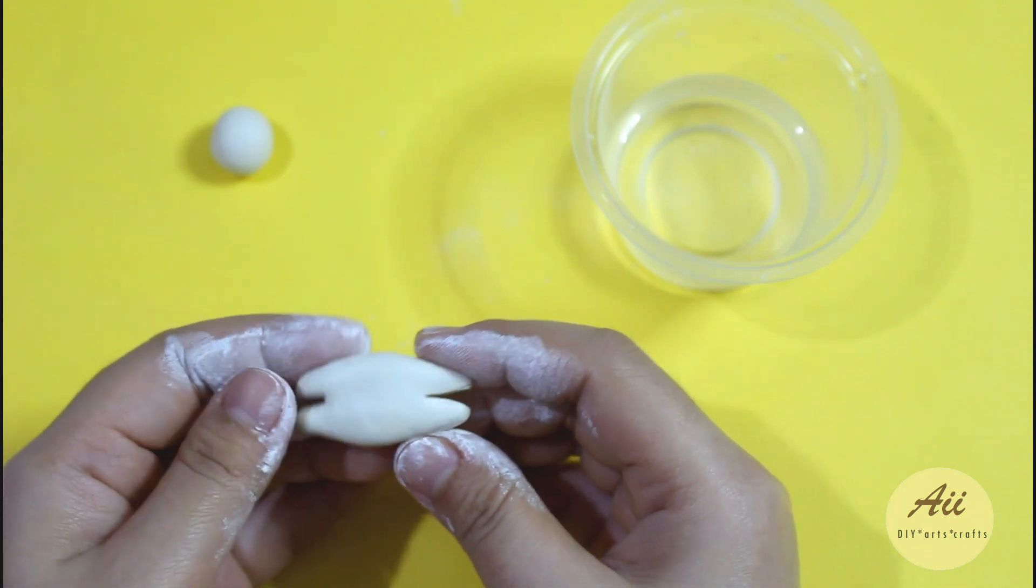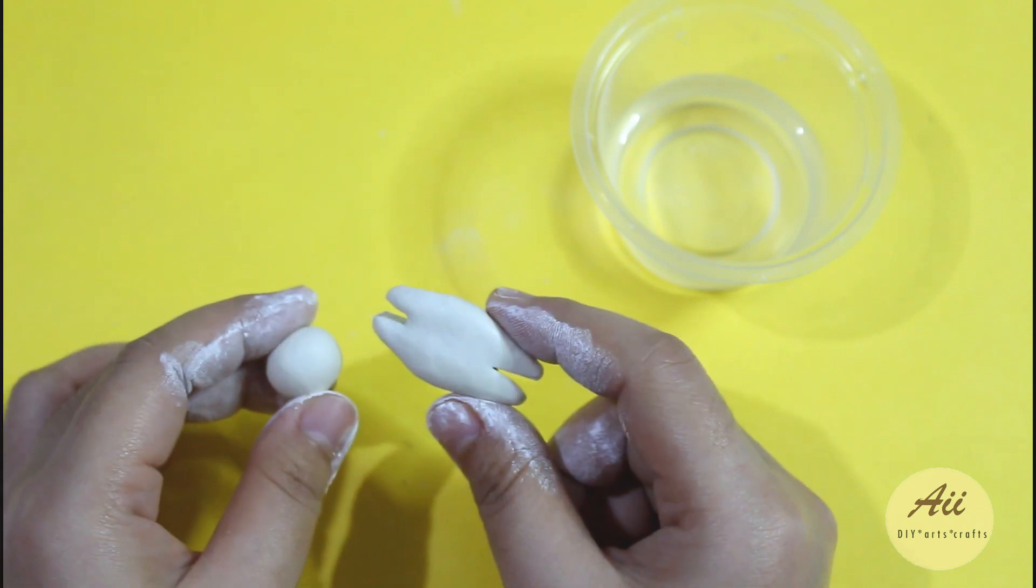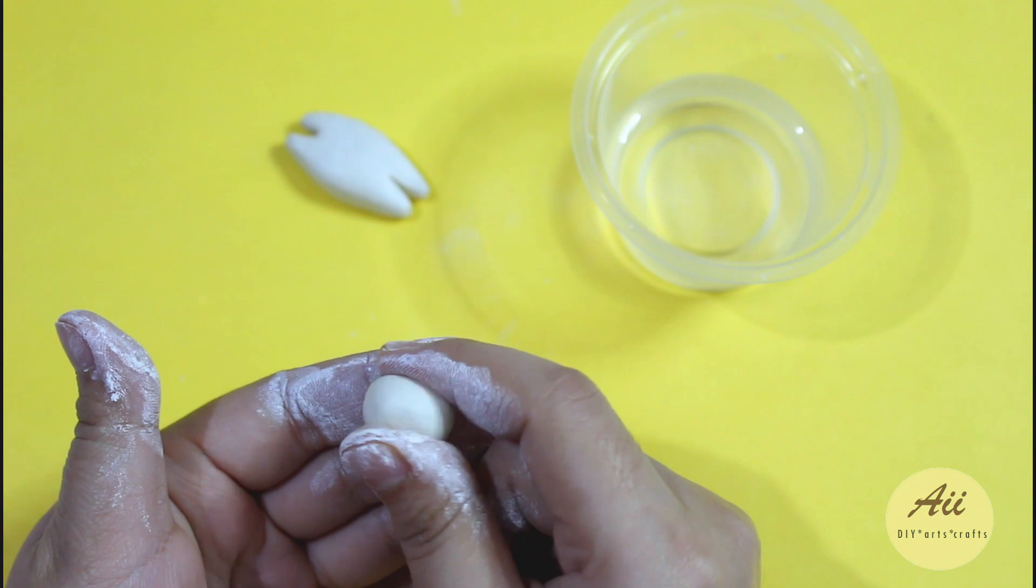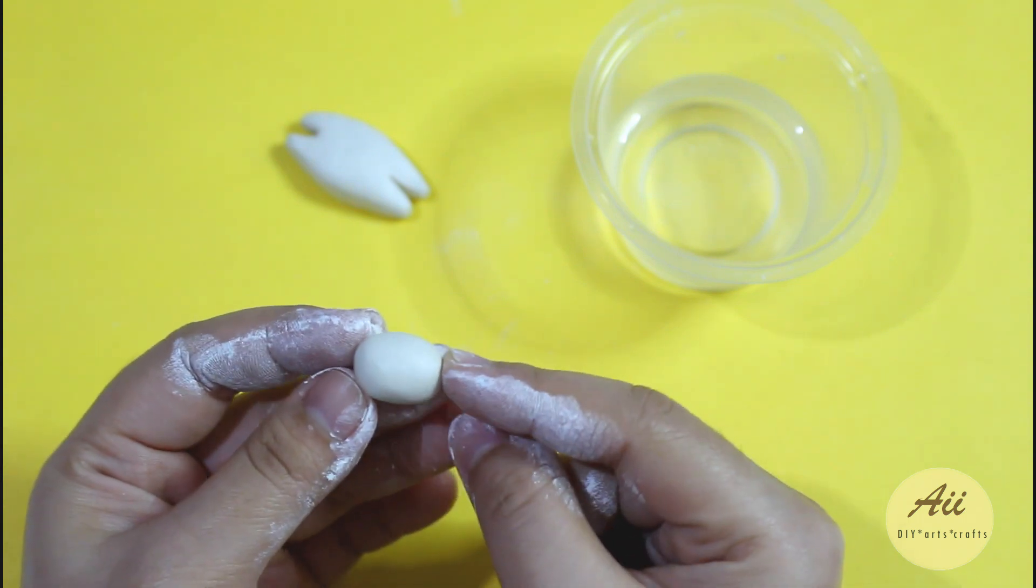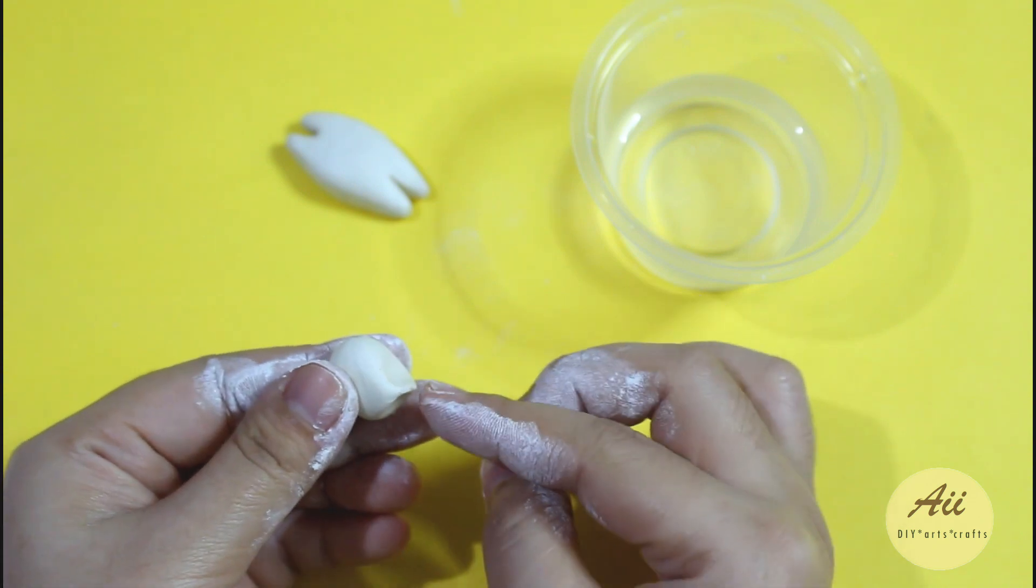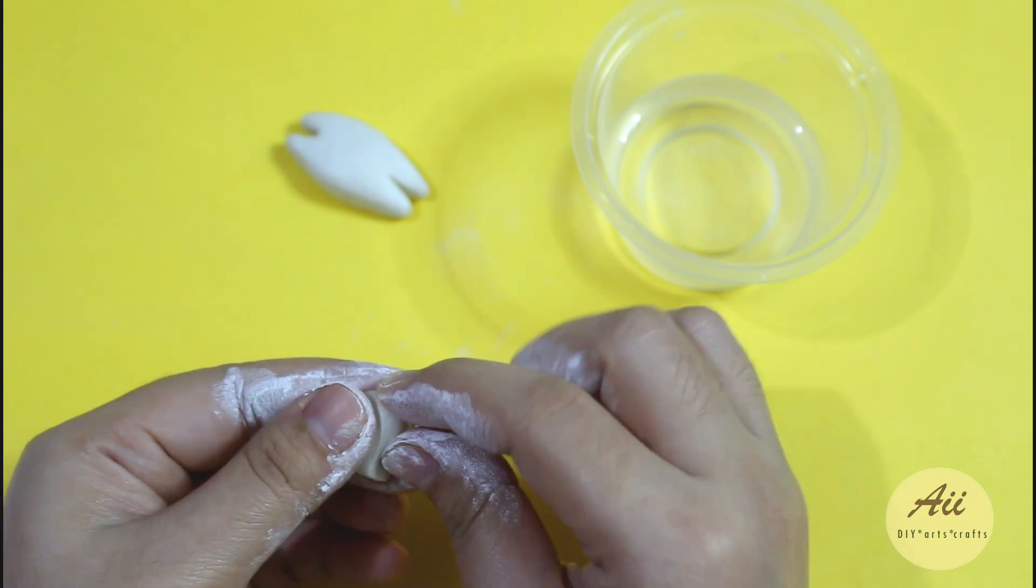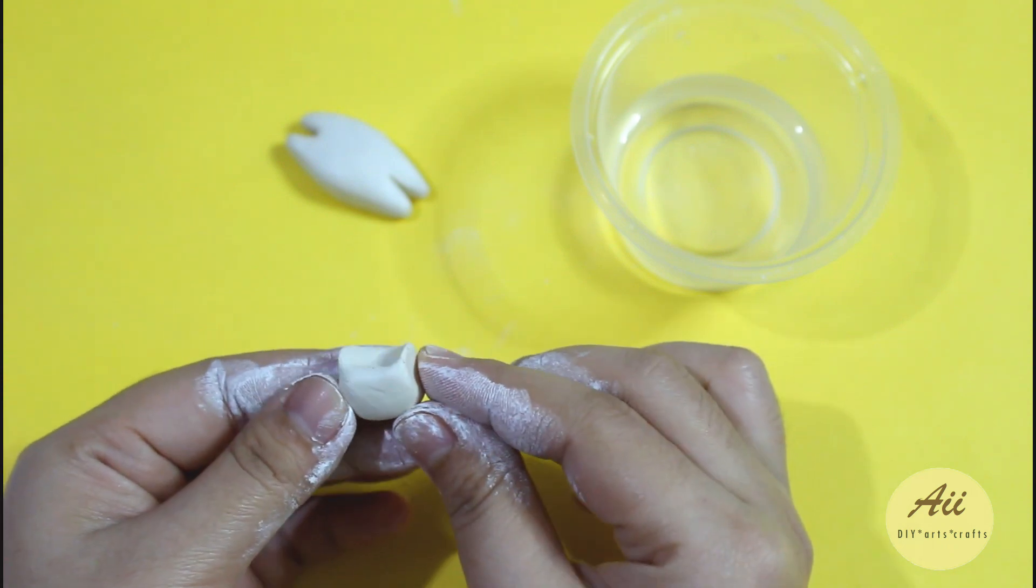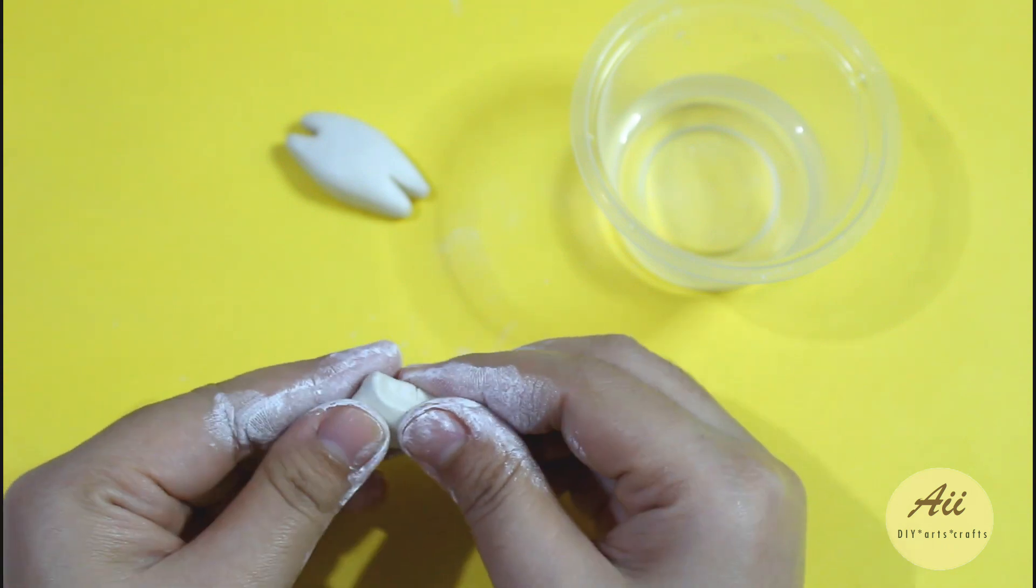Now with a smaller piece of clay roll it again into a cylinder shape and using your fingers lightly pinch the top sides of the cylinder and shape it into cat ears.